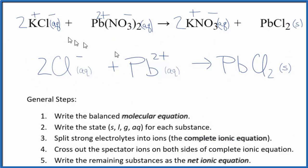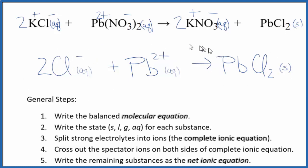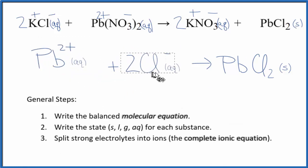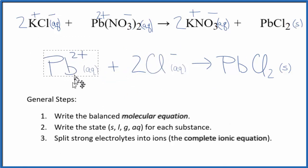I'll clean this up and add the states — this is the balanced net ionic equation for potassium chloride plus lead 2 nitrate. You'll note that charge is conserved: I have 2 times 1 minus, so I have 2 minus, and 2 plus — they cancel out, and the product is neutral. We have two chlorine atoms on each side, and 1 lead on each side, so mass is conserved as well. Often you'll see the positive ion put first in net ionic equations — it's the same thing, doesn't really matter. This is Dr. B with the balanced net ionic equation for KCl plus Pb(NO₃)₂. Thanks for watching.